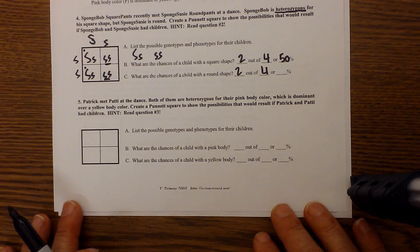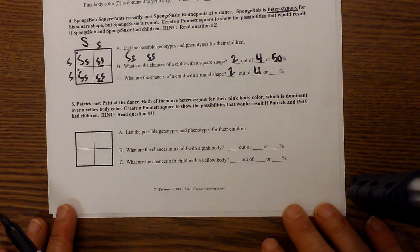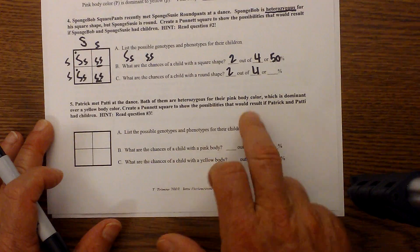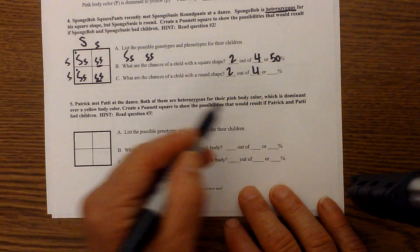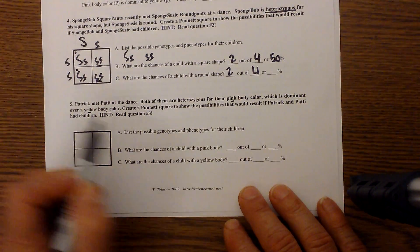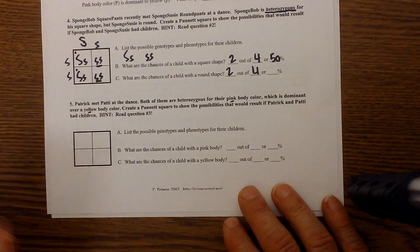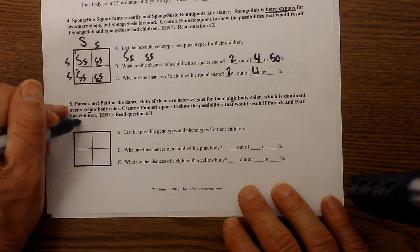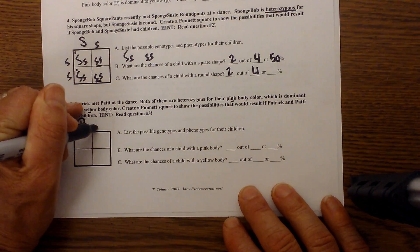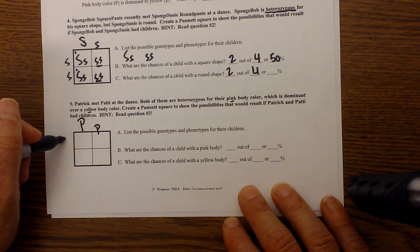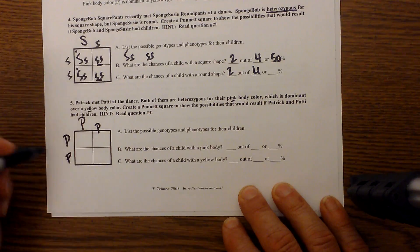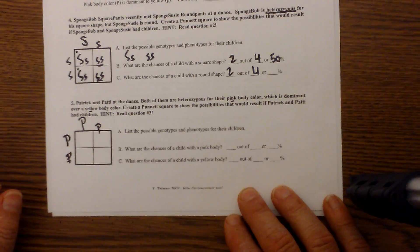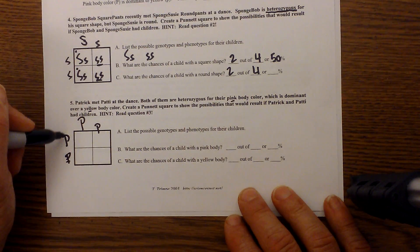And finally, let's work one more here. It says Patrick met Patty at a dance. Both of them are heterozygous for their pink body shape, which is dominant over yellow. Create a Punnett square. So I'm going to go ahead and use P for pink. And we know that they're both heterozygous. And remember, any time you have heterozygous, that's going to be the dominant trait. This is a lowercase p. So pink is dominant over yellow.